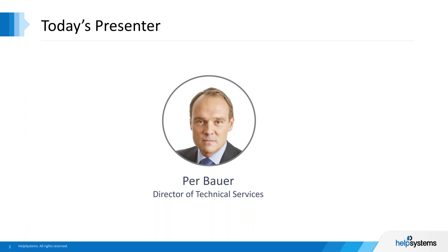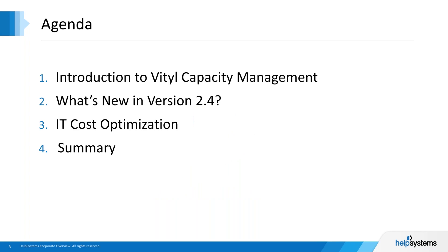If we look at what we're going to cover today: we have a new version of Vital Capacity Management coming out in July, version 2.4. Since I assume that some of the people on this call are new to our solution, I'm going to spend a few slides at the beginning talking about Vital Capacity Management at large — what the solution is capable of and how it looks — and then we're going to focus on the new features added in version 2.4, primarily the cost aspects, how to drive efficiency in your environment, and then at the end we'll do a summary.